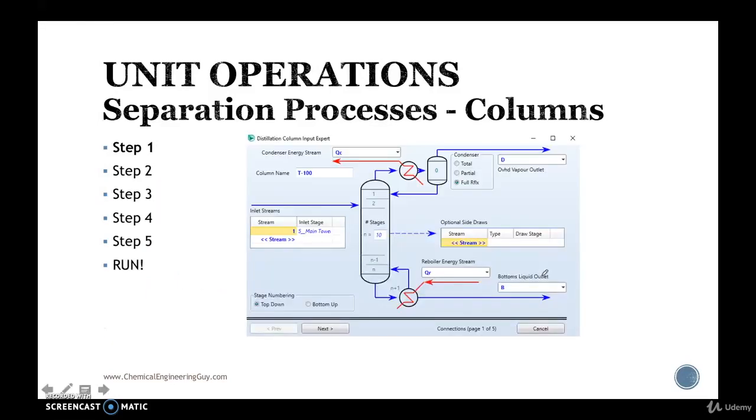Now this is the screenshot for the first step. As you can see you need to state an inlet. You need to state the stage of the inlet. You need to state the number of stages, heat duty for reboiler and condenser, the type of condenser, either total, partial or full reflux, the distillate flow rate, bottom flow rate. And this is everything for step one.